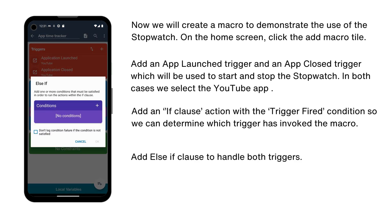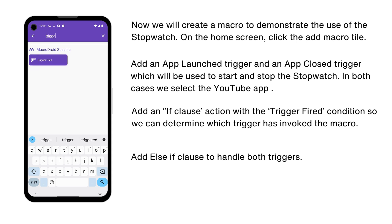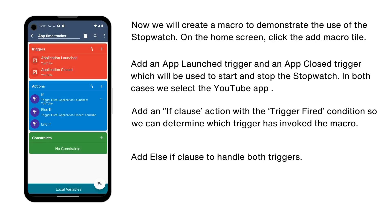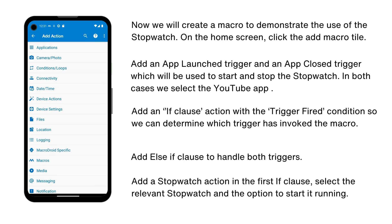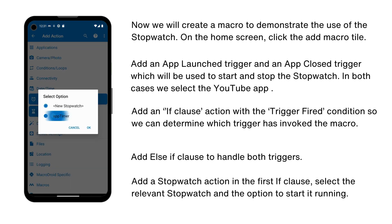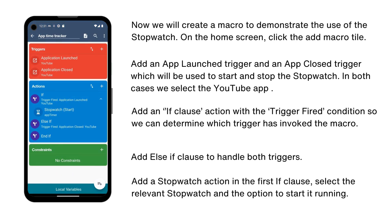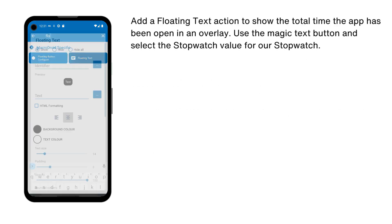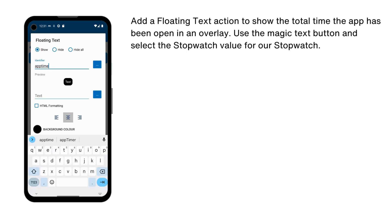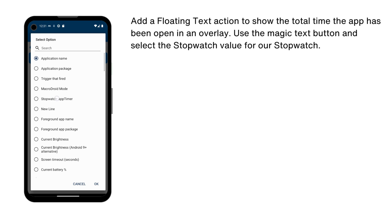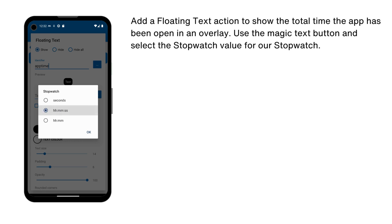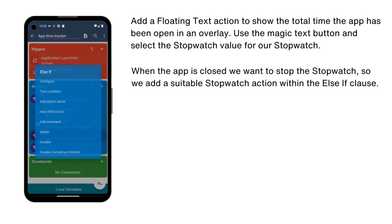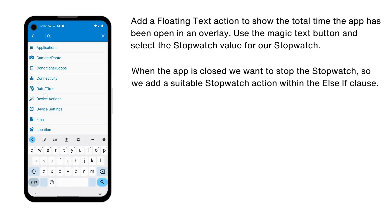We add an else if clause so we can handle both cases. When the app is launched we want to start the stopwatch running, so we add a stopwatch action, select the relevant stopwatch, and the option to start it running. We also add a floating text action to show the total time the app has been open in an overlay, using the magic text button to select the stopwatch value. When the app is closed we want to stop the stopwatch, so we add a suitable stopwatch action within the else if clause.